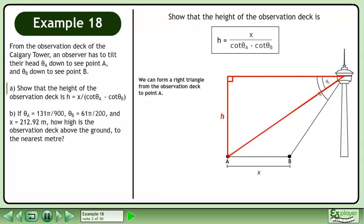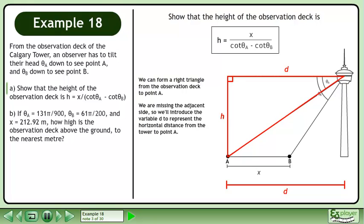We can form a right triangle from the observation deck to point A. We are missing the adjacent side, so we'll introduce the variable d to represent the horizontal distance from the tower to point A. The equation tan theta A equals h over d can be formed from the triangle.